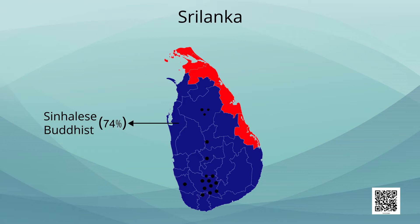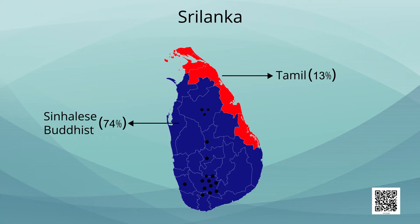The Sinhalese are in majority and speak Sinhalese language. In the northern and eastern part of Sri Lanka, marked in red on the map, are the native Tamil people of Sri Lanka, constituting 13% of the total population and they speak Tamil. There are also black dots in the middle of the map representing Indian Tamil, who constitute 5% of the total population.